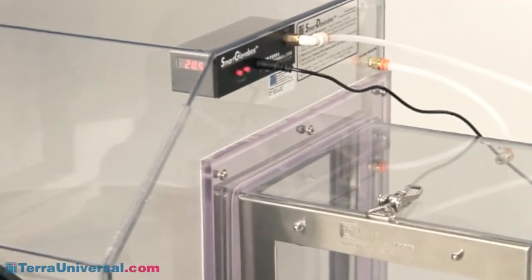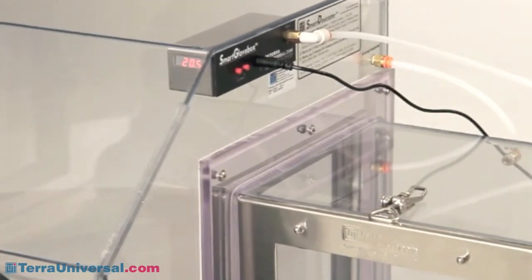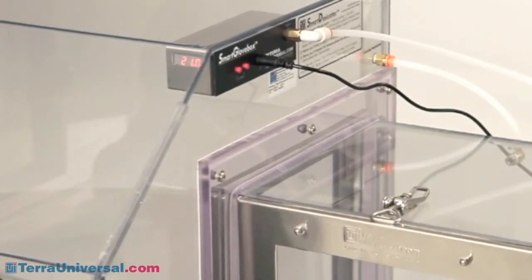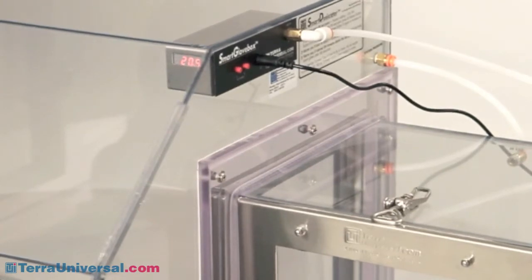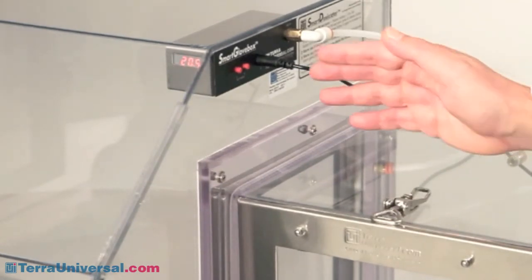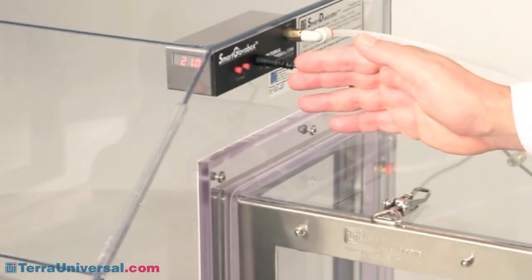That level will ensure safe operation as long as the unit is equipped with the factory installed RV valve. Once connections are made, the LED display will indicate the relative humidity level measured inside the chamber.